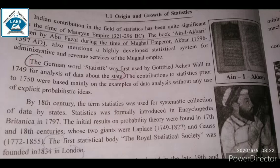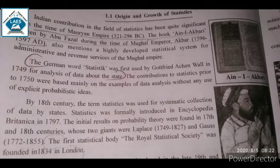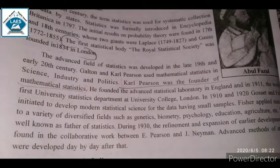In the 18th century, the term statistics was used for systematic collection of data by states. What do we do in statistics? We collect data systematically. The first statistical body, the Royal Statistical Society, was founded in 1834 in London.